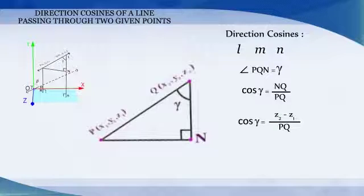Similarly, we get cos alpha is equal to (x₂ - x₁)/PQ and cos beta is equal to (y₂ - y₁)/PQ.